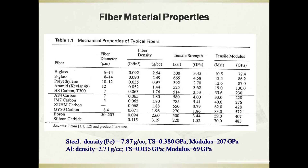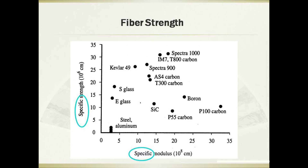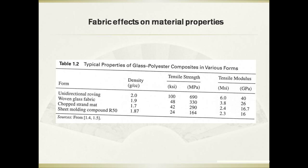This chart demonstrates the material properties — mainly the mechanical properties — of typical fibers. This figure shows the relationship between specific modulus and specific strength of some fibers. The typical properties of glass composites in various forms are shown in this table.